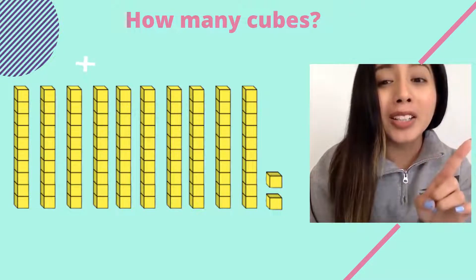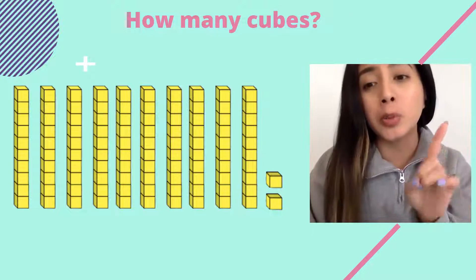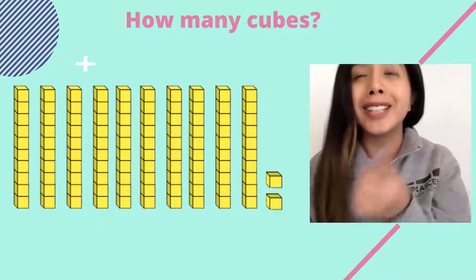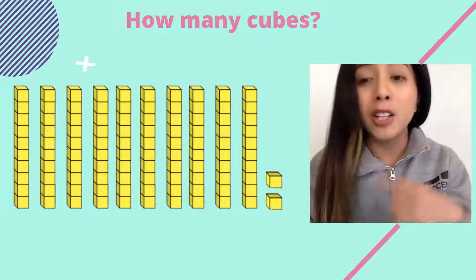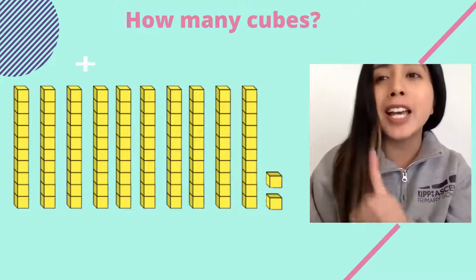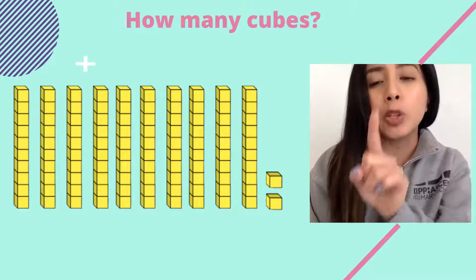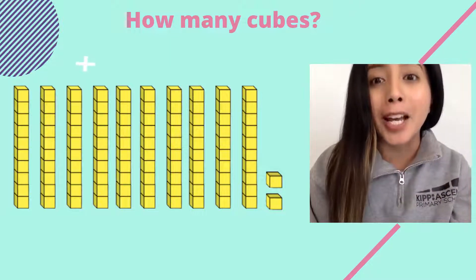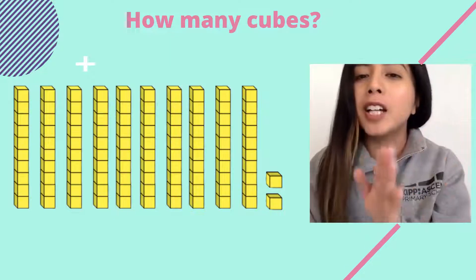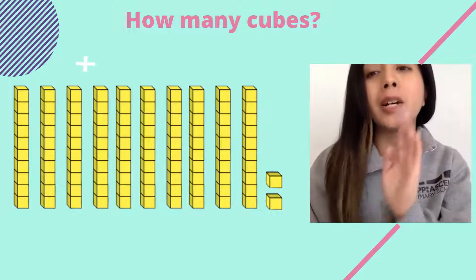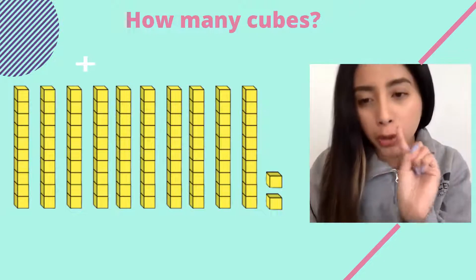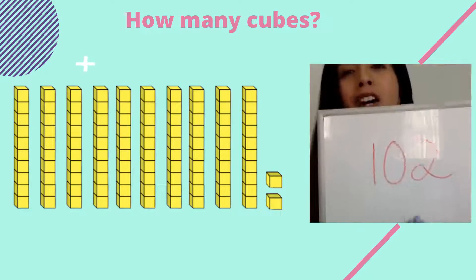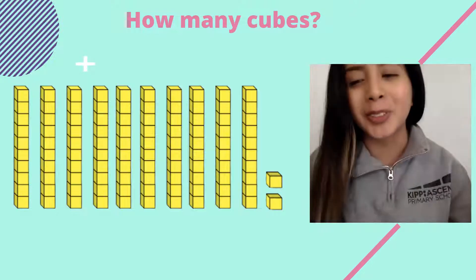And now we got to those two extra cubes that are there. If I said 110, would that be right? Nope, because I no longer see any more 10 sticks. So with those two extra cubes, I now have to start counting by ones. We left off at 100, and now we can say 101, 102. There are 102 cubes on the screen.